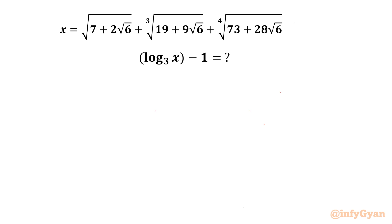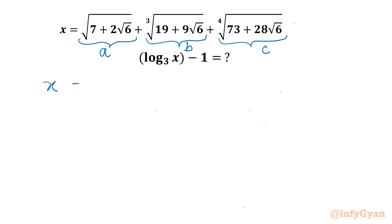So let's call square root of (7 plus 2 root 6) as a, cube root of (19 plus 9 root 6) as b, and 4th root of (73 plus 28 root 6) as c. So x is equal to a plus b plus c.